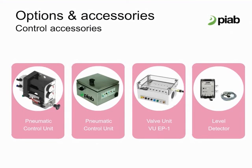PIAB offers different control options for each one of our vacuum conveying systems. The standard PIAB control boxes are completely pneumatic, reliable, low maintenance, and do not require any electrical supply. We also offer various level detectors to be used in conjunction with our pneumatic controls. In addition, we offer an electrical pneumatic valve unit that can be used with electrical control systems such as a PLC. For more detailed information on our controls, please see the controls training module.